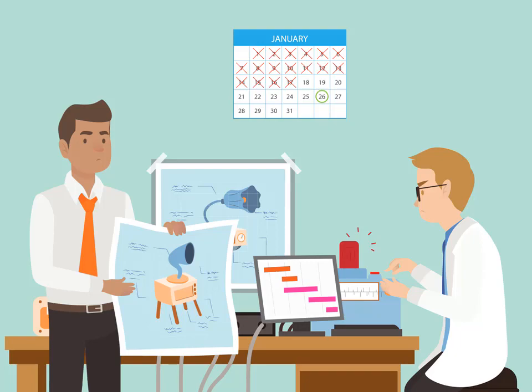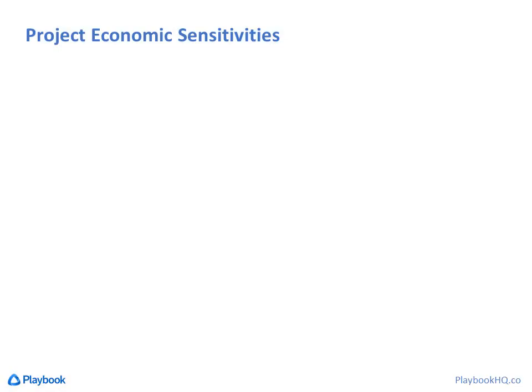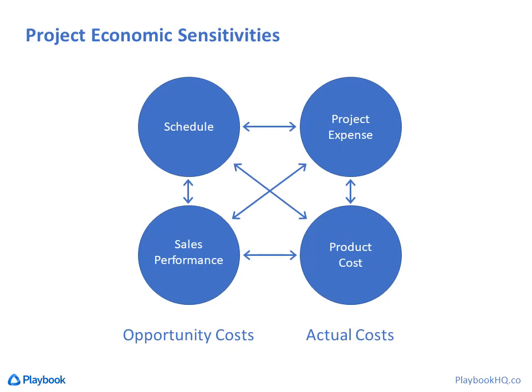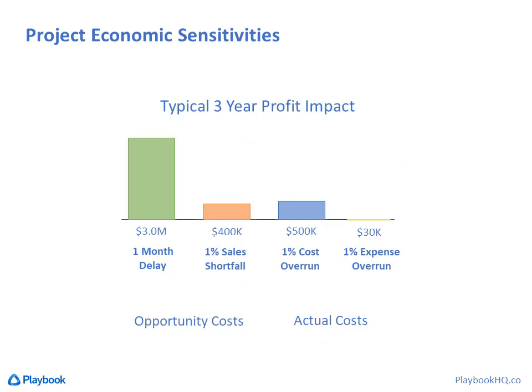In another video I'm going to show how to create a project economic model which analyzes the economic sensitivities of three other project variables that impact lifetime profit: project expense, product costs, and sales performance. Once you know those, teams can make trade-off decisions regarding scope, resources, design decisions, and schedule — all in relation to their impact to profit. That way, better decisions are made faster and without hassle.